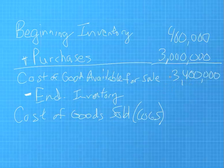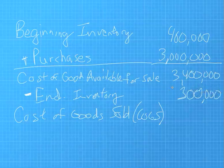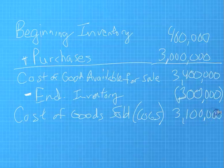Our ending inventory, let's say that throughout the year after we purchased everything, when we do our inventory at the end of the year, we find out that we have exactly $300,000 left over. So we're going to subtract the $300,000 from our cost of goods available for sale. This will tell us what our cost of goods sold is. In this case, it will be $3.1 million. We'll take $3.4 million minus $300,000 and it'll give us cost of goods sold.